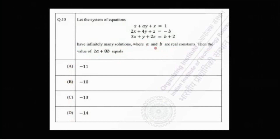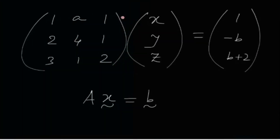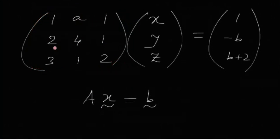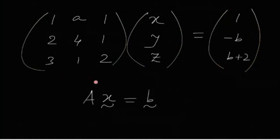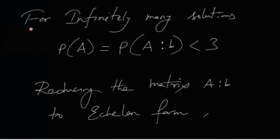This system of equations has infinitely many solutions where a and b are some real constants, and we are supposed to find the value of 2a + 8b. Writing this entire system in matrix form, we have the coefficient matrix with entries 1, a, 1; 2, 4, 1; 3, 1, 2 — along with the vector of unknowns and the right-hand side vector. This entire thing can be written as A times x-vector equals b-vector.